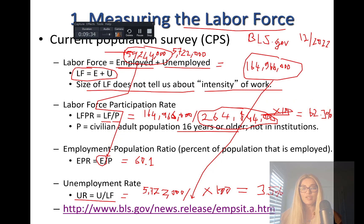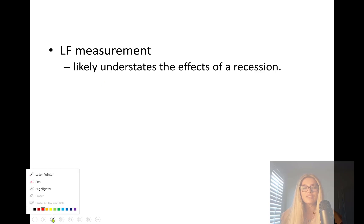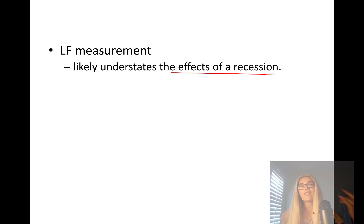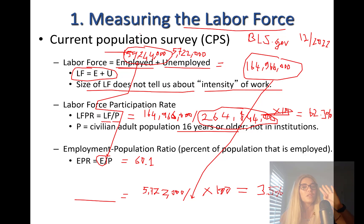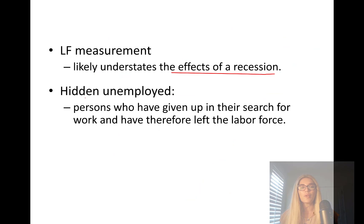You just learned how to calculate the unemployment rate. Labor force measurement likely understates the effects of recession. Whenever you have a recessionary period, you have discouraged workers — people who are actually out of the labor force because they stopped looking for a job. To be considered unemployed, you need to be actively looking for a job within the last four weeks. Hidden unemployment is an important concept: these are people who gave up their search for work and therefore left the labor force — the hidden unemployed, the discouraged people.